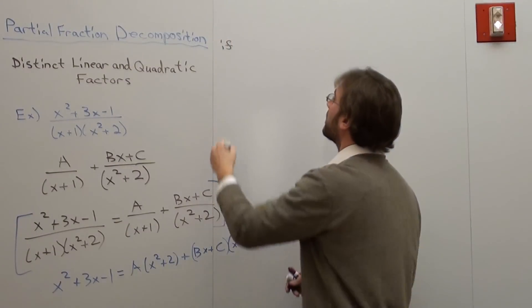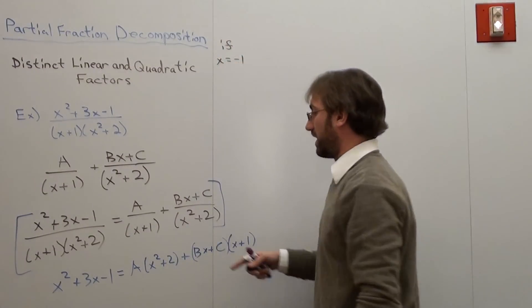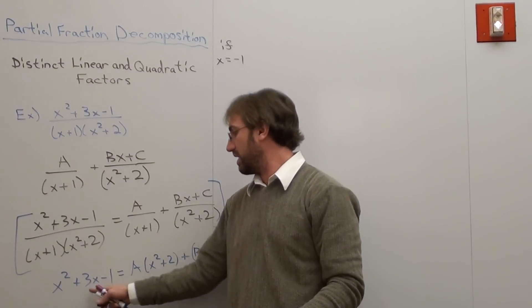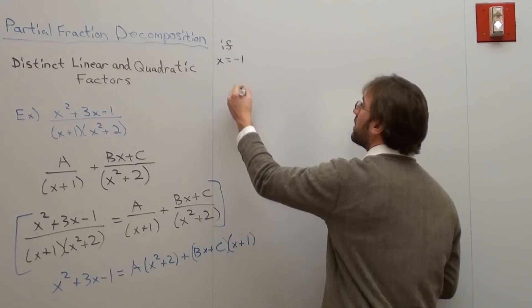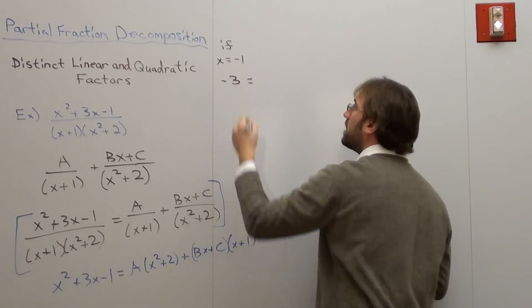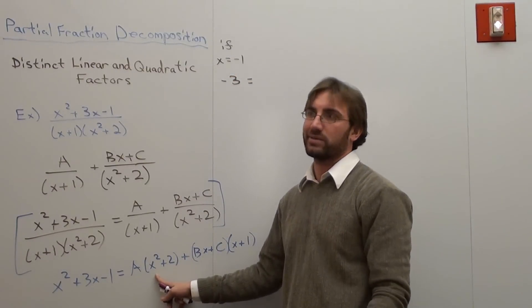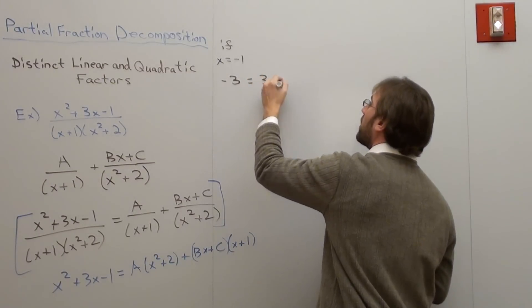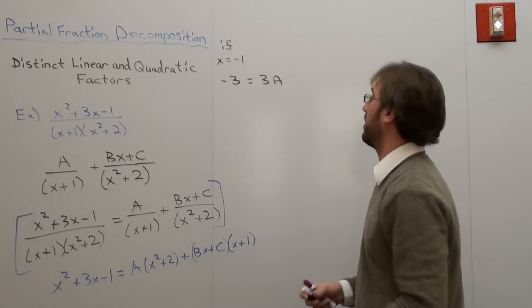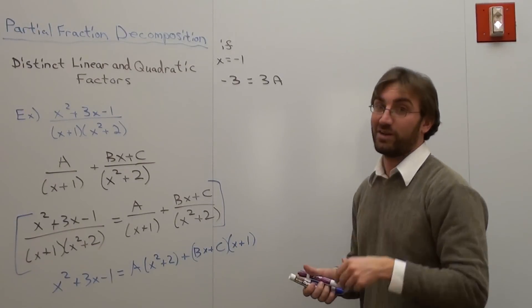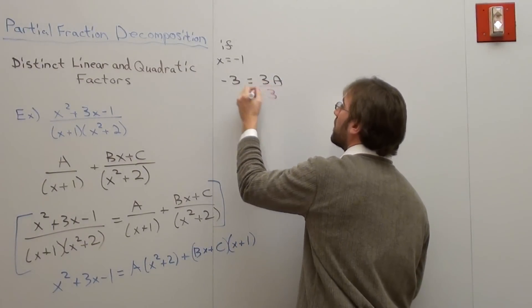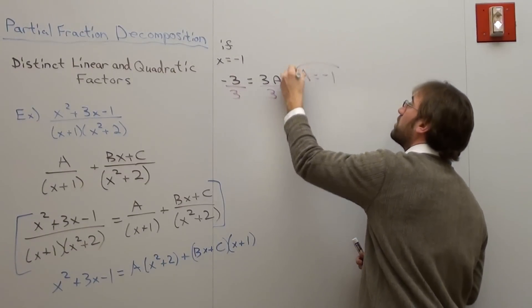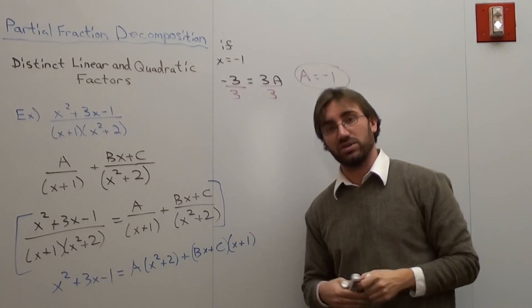If x equals negative 1, then what I got is negative 1 squared plus 3 times negative 1 minus 1. Now that's 1, that cancels, so it's negative 3, equals negative 1 squared plus 2, so that's 3a. That's a 0, that cancels out. Divide by 3 on both sides, a equals negative 1.